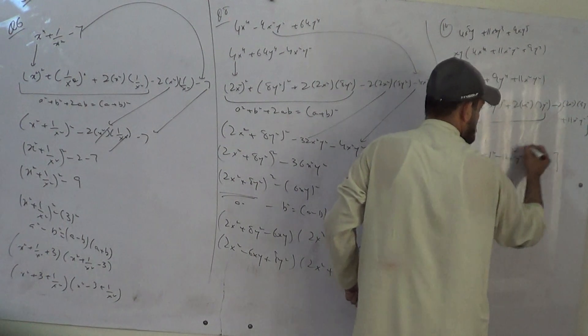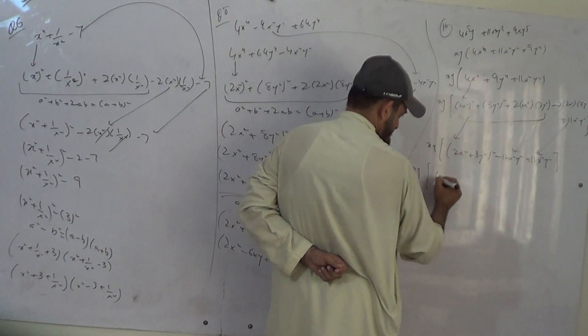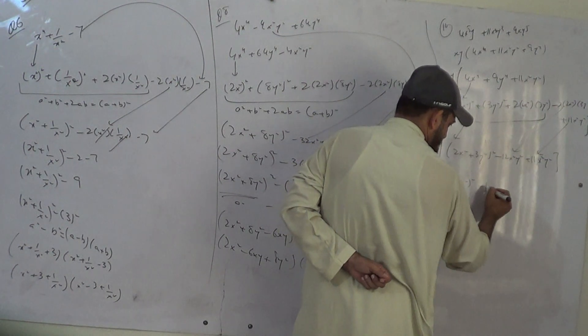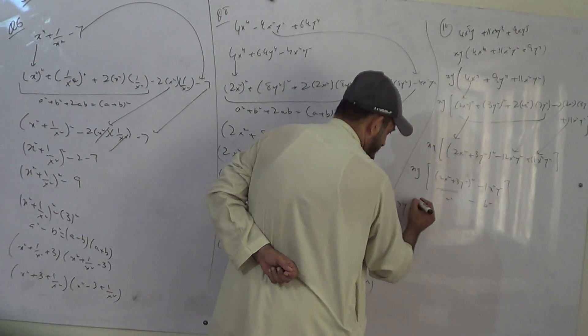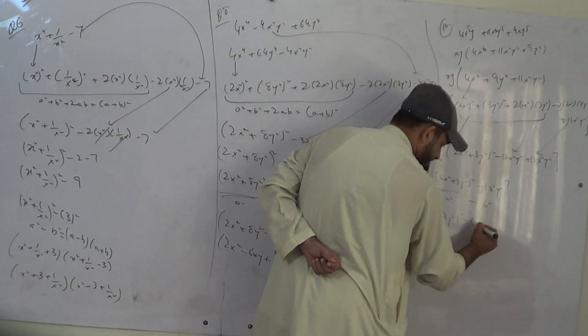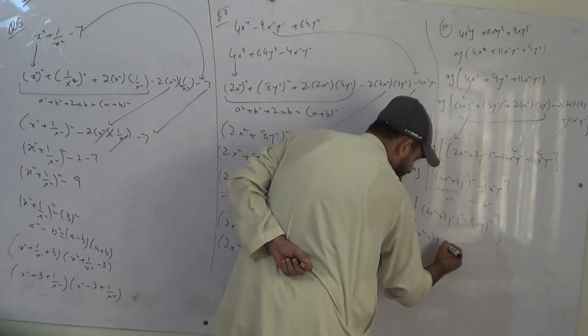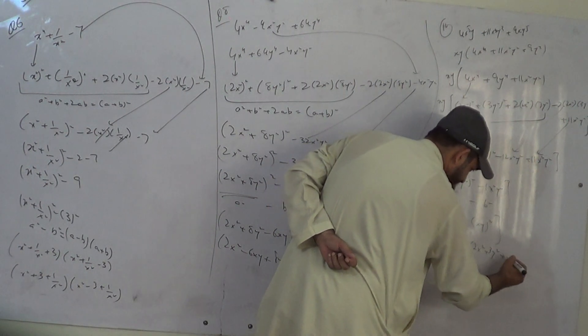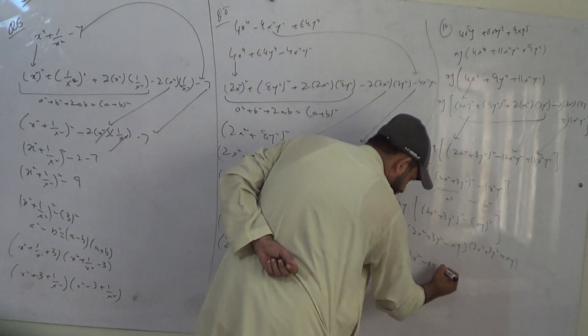Minus 12x square y square plus 11x square y square come here. Minus 1x square y square. It will be a square minus b square. A minus b times a plus b. Arrange in descending order with respect to y.